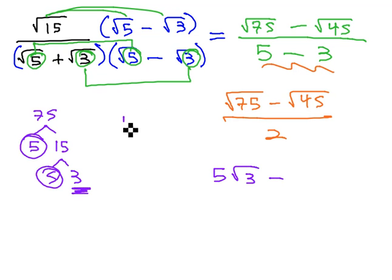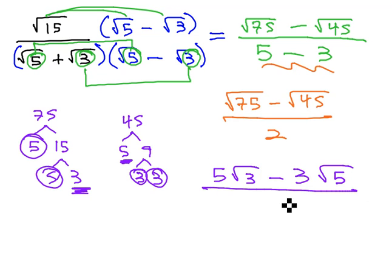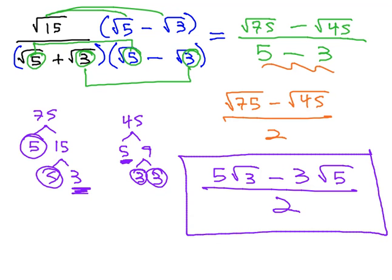Minus the 45. That's 5 times 9, the 9 is 3 times 3. Two 3's under the radical, the 3 comes out, leaving a 5 behind, all over 2. No radical in the denominator. We have rationalized our expression.